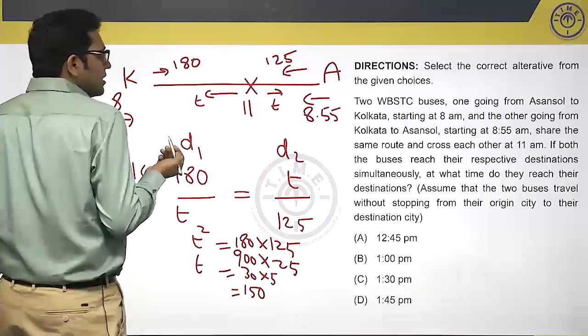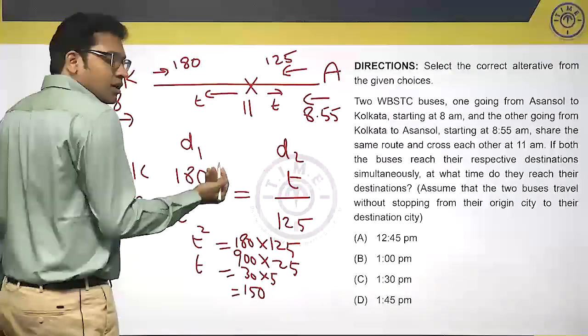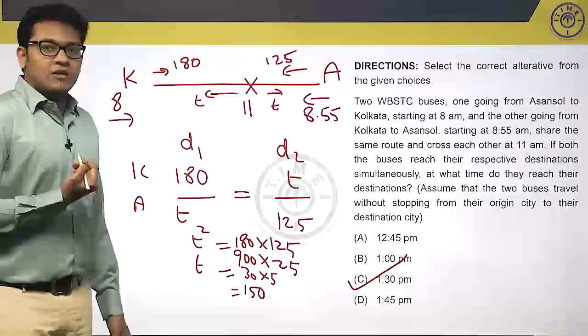At what time they reach the destination. After 11, they take T minutes, which is 150 minutes, 2.5 hours. 11 plus 2.5, 1:30 PM, they will reach their respective destinations.